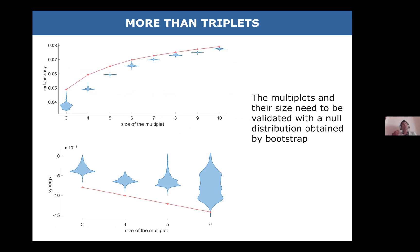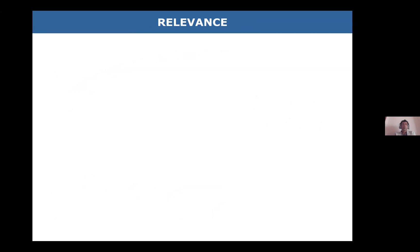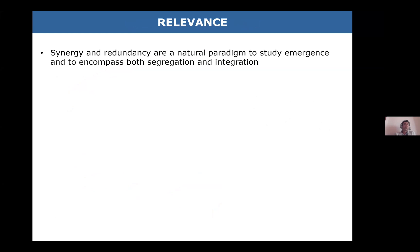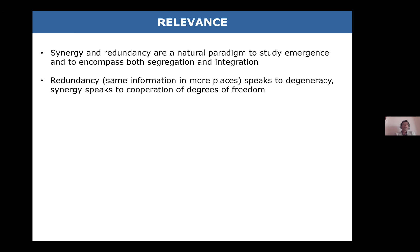We stop the expansion — of course once we expand from a triplet to a quadruplet and so on — when the amount of synergy and redundancy in a multiplet becomes compatible with that of a null distribution, obtained either by bootstrap or by permutations.